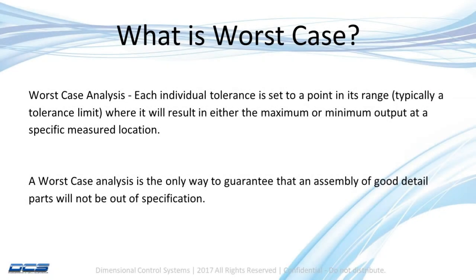So what is worst case? A worst case analysis sets each individual tolerance to a point in its range, which is typically a tolerance limit, where it will result in either the maximum or minimum output at a specific measured location. In a worst case analysis, you are setting all of your tolerances to their worst possible spot for that specific area you're measuring. It's the only way to guarantee that with good detail parts, that measure will not be out of specification.